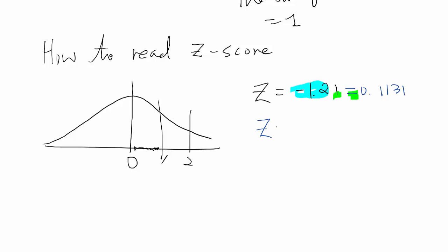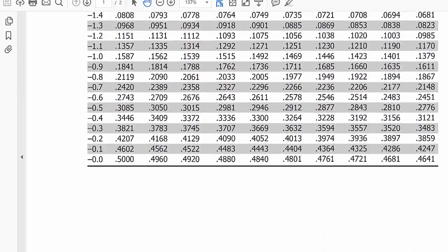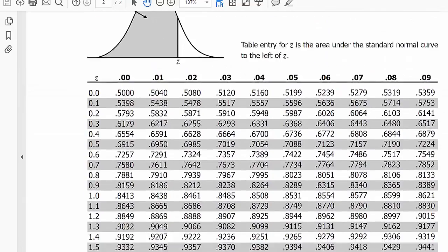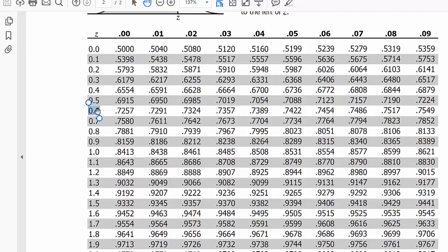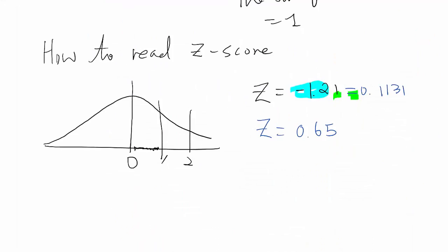How about this case, z equal to maybe 0.65. So now we got the positive z-score, then you also have to go to positive side here. So 0.65, so 0.6 right here, and then go to the 5 section, which means this value, which is 0.7422.